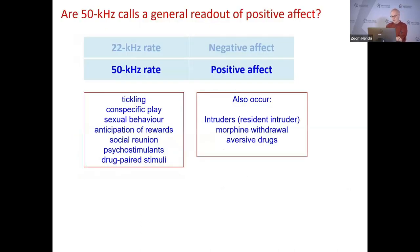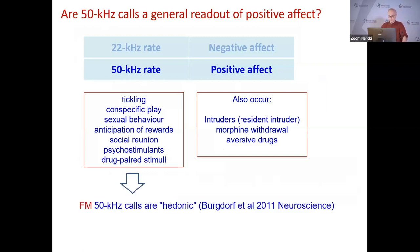Not least because rats also make 50 kHz calls in aversive situations, such as when an intruder enters a resident's enclosure and is likely to get beaten up. Also in morphine withdrawal — we've published that — and with aversive drugs. The rats still make 50 kHz calls in those contexts as well.